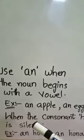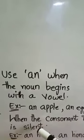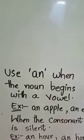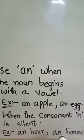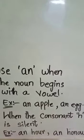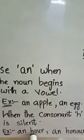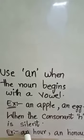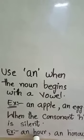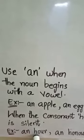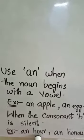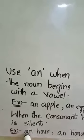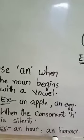So there is one more rule that when the consonant H is silent, we use an here. Like the examples are an hour, an honor. So as you can see, H-O-U-R, hour. We cannot say here hour. Here H will be silent. For such words, we use an here. Even though it is a consonant letter, it is pronounced as A. A means it comes under vowel sound. So that's why we use here an. An hour, an honor.